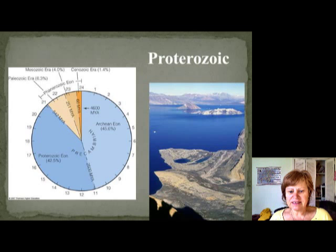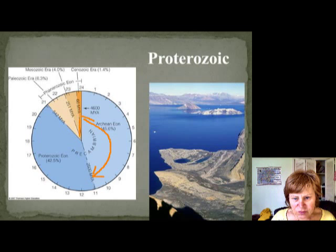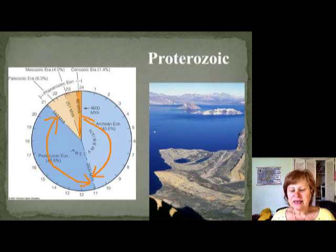Hi everybody, this is Dr. Anna, your geology professor, and this is Historical Geology. Today's topic is the Proterozoic. This picture shows the whole Earth history, and you can see that the Archean is 45.6% of all geologic time. The Proterozoic is about 42.5%, and so when we're talking about the Proterozoic, you have to understand that it's 42.5% of all Earth history, and it's still Precambrian. There are still a lot of metamorphic rocks.